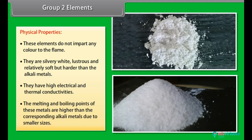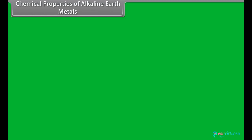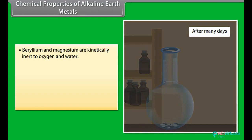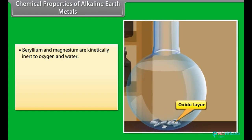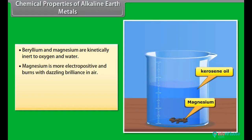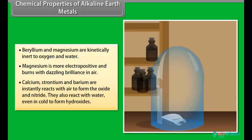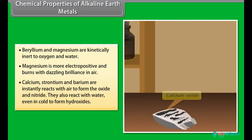Chemical properties of alkaline earth metals: Beryllium and magnesium are kinetically inert to oxygen and water. Magnesium is more electropositive and burns with dazzling brilliance in air. Calcium, strontium, and barium instantly react with air to form the oxide and nitride.